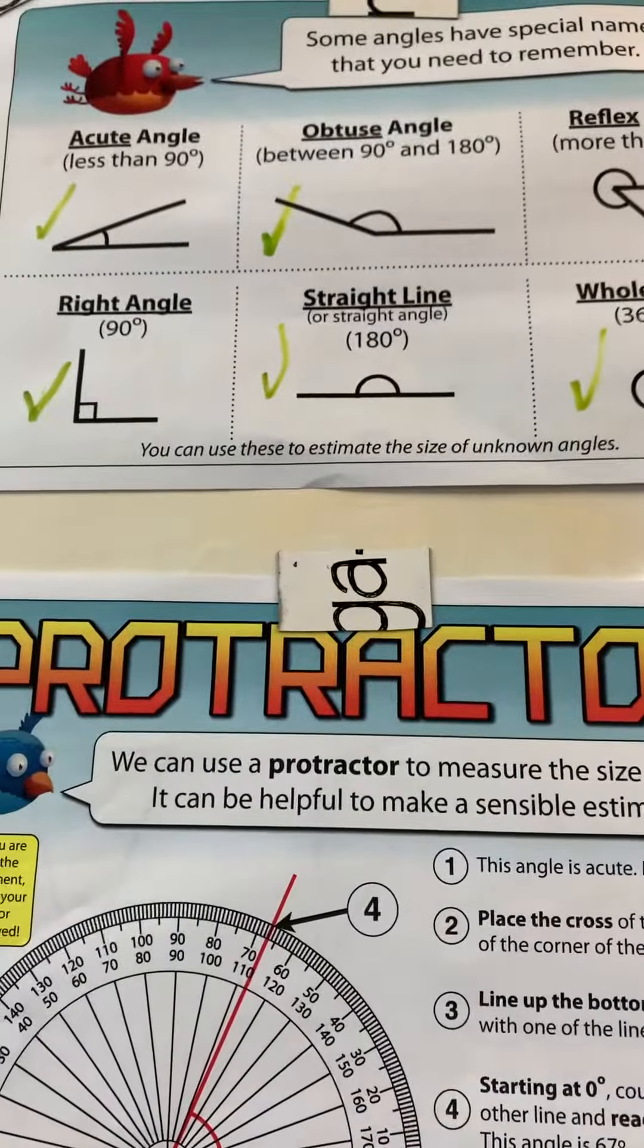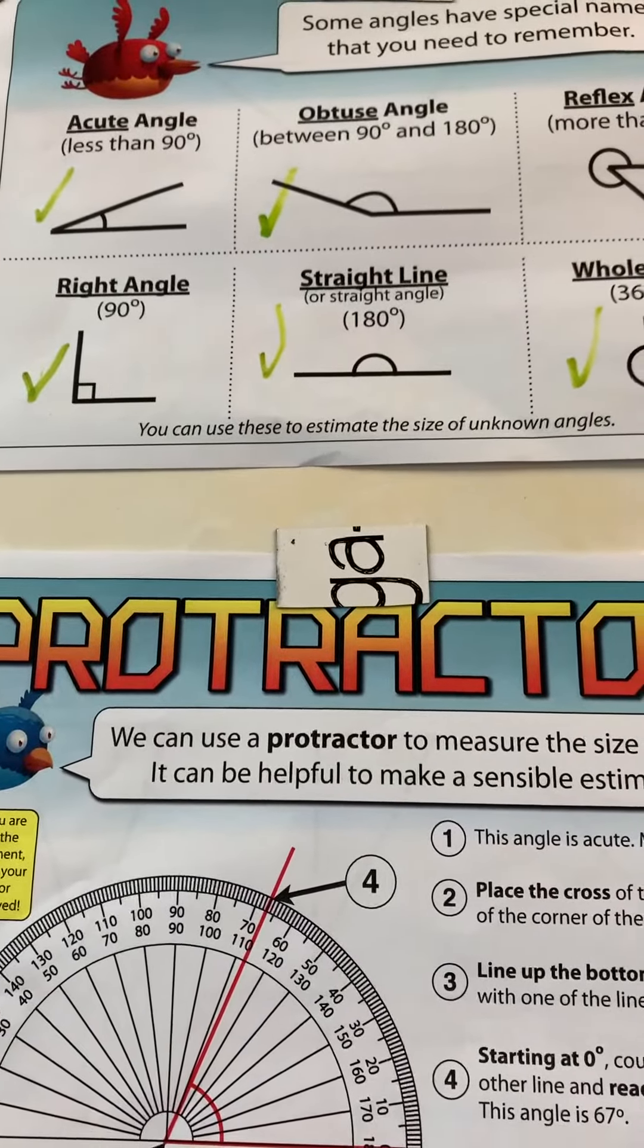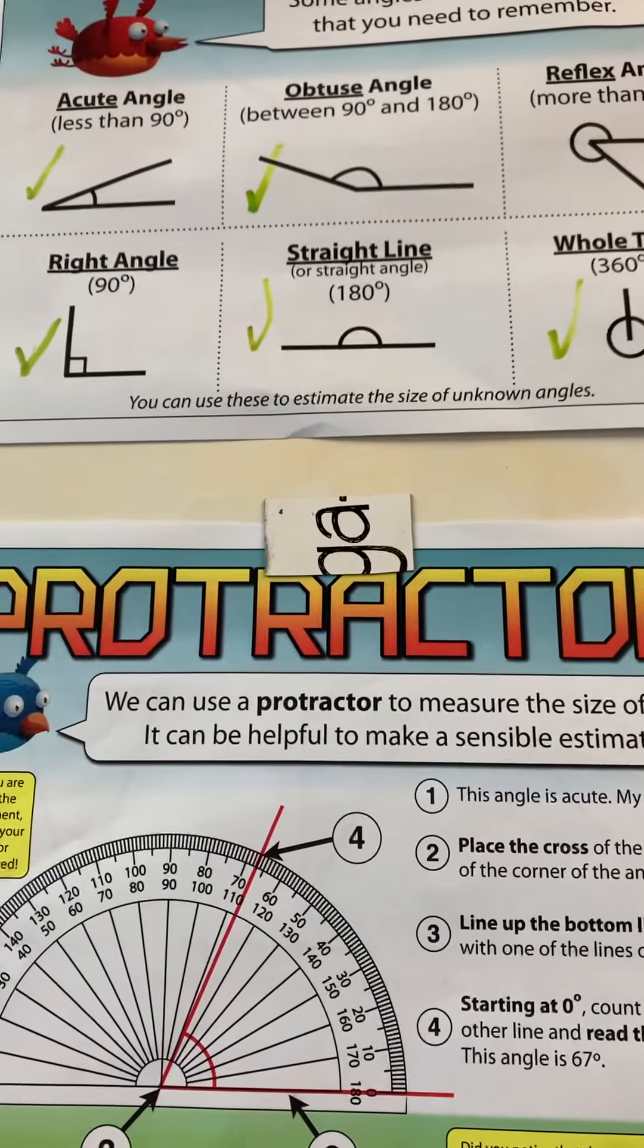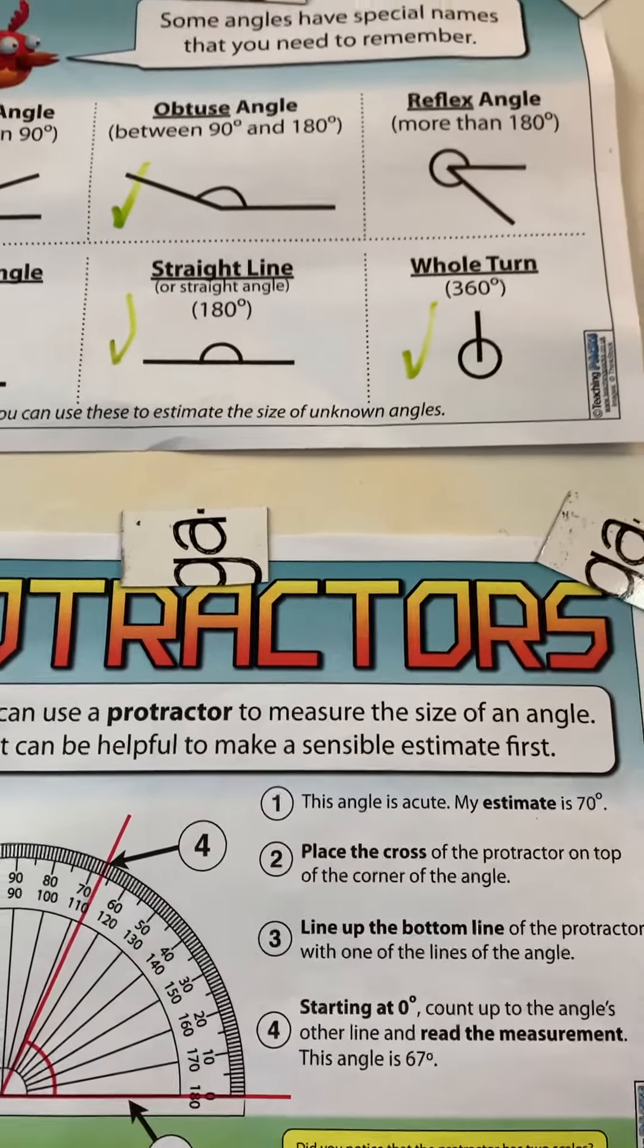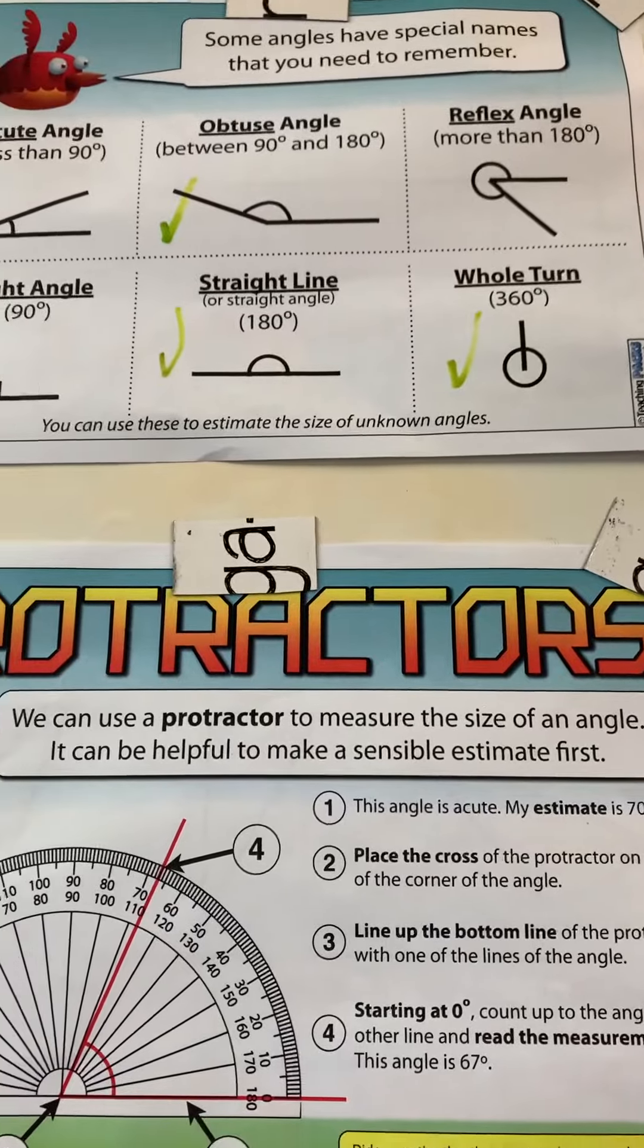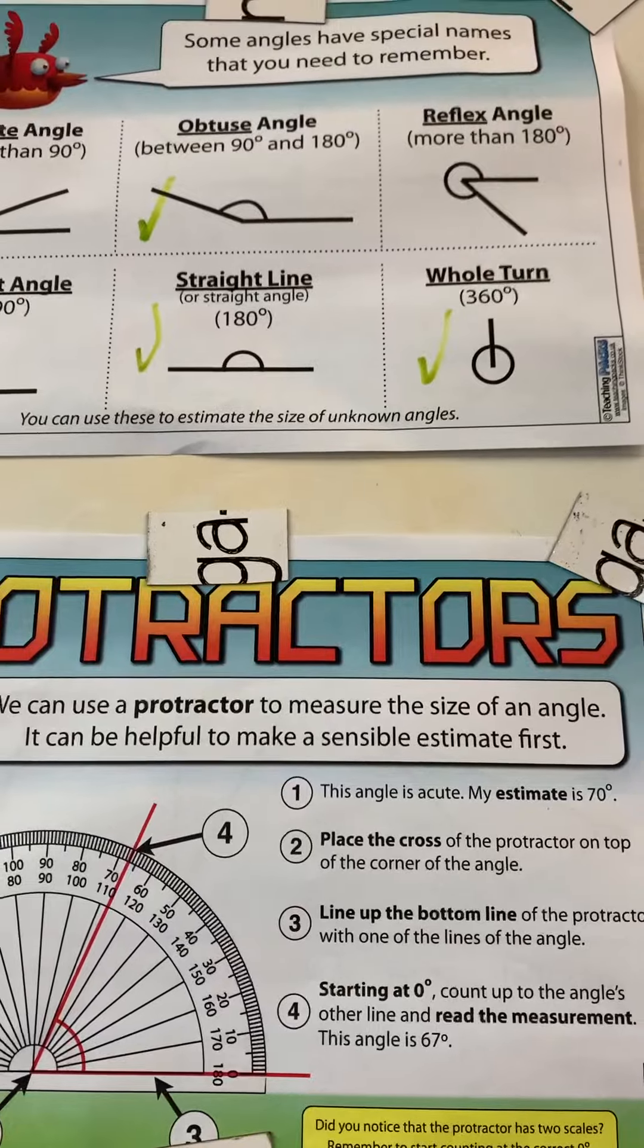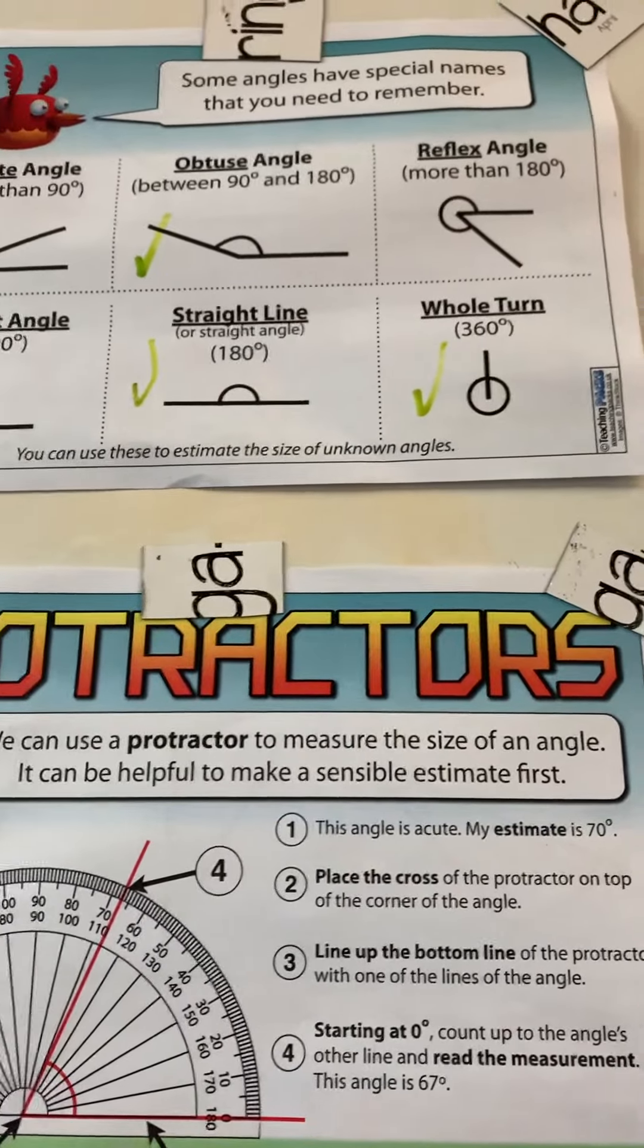Now, after 180 degrees, your straight line, you start to get into your whole turn. But between a straight line and a whole turn, you have a reflex angle. So there's the straight line, there's the whole turn, and in the middle is a reflex angle.